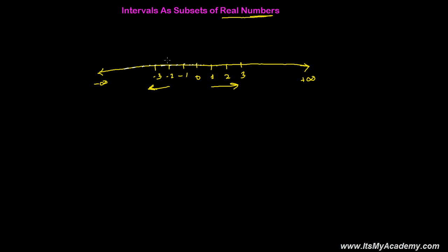So there are an infinite number of subsets possible. You can take numbers from any region — for example, all numbers greater than 2 and smaller than 3, or all numbers greater than 0 but less than 2. In that way, there are a huge number of subsets possible to create. We are going to categorize those subsets into two parts.